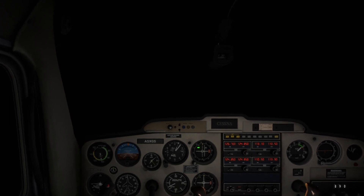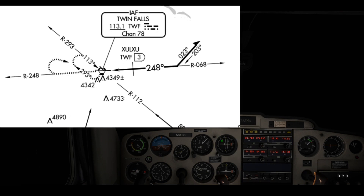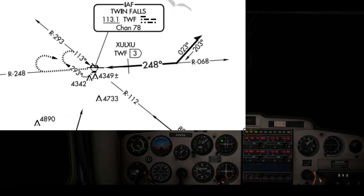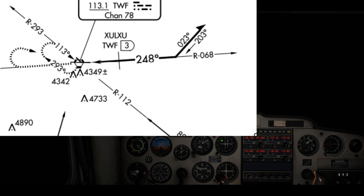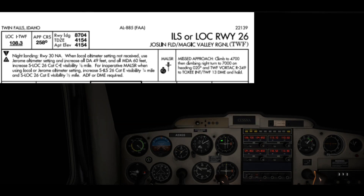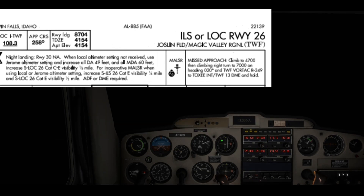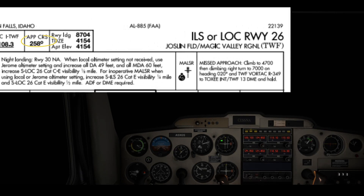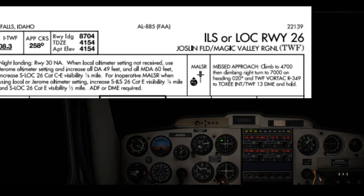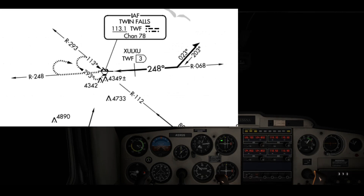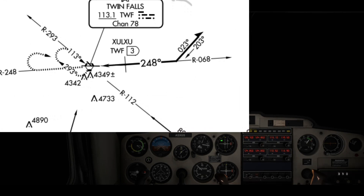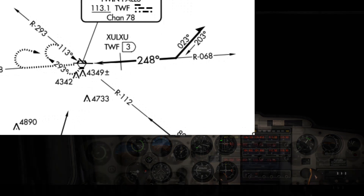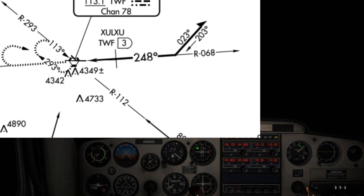One important point about this VOR approach is that it has a slight offset. Notice how the approach course of 248 is not perfectly aligned with the runway. The precision ILS approach for runway 26 has a final approach course of 258. This VOR approach is a non-precision approach and is not perfectly aligned with the runway, so just before touchdown our heading will be closer to the actual runway heading of 258.